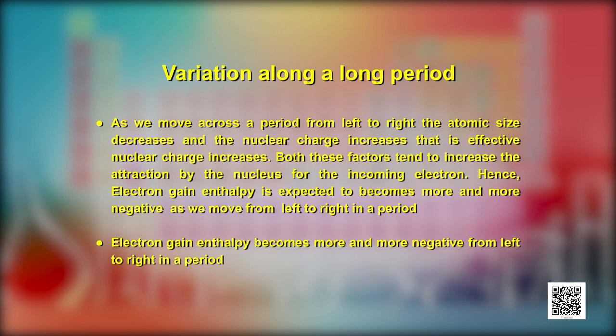The valence is the most characteristic property of elements and can be understood in terms of their electronic configurations. The valence of representative elements is usually — though not necessarily — equal to the number of electrons in the outermost orbitals, or equal to 8 minus the number of outermost electrons. Nowadays, the term oxidation state is frequently used. The oxidation state of an element in a particular compound can be defined as the charge acquired by its atom on the basis of electronegativity considerations from other atoms in the molecule.